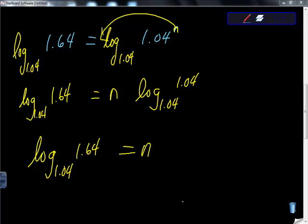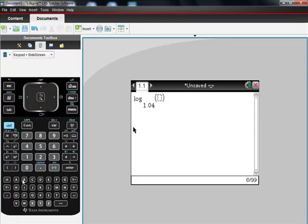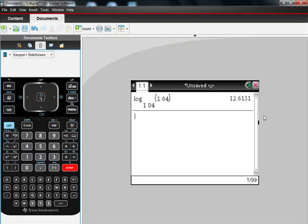If we put that into the calculator, we should get back, oh look, it's there. What did I say it was? I can't believe I'm that good. Log 1.04 of 1.64, that's 12.4. So we're going to round up to 13. We good?